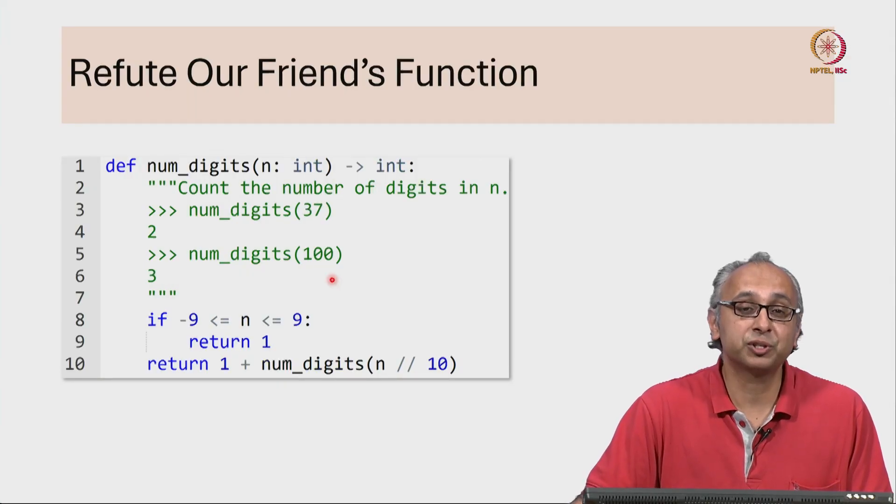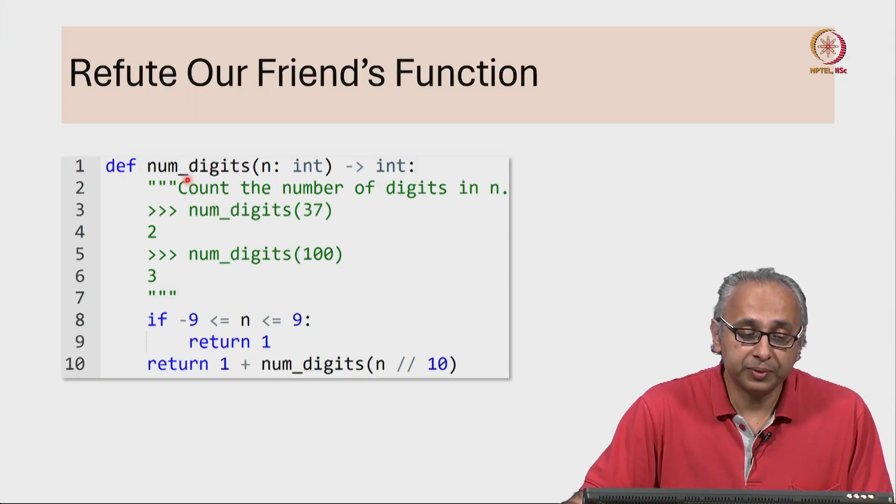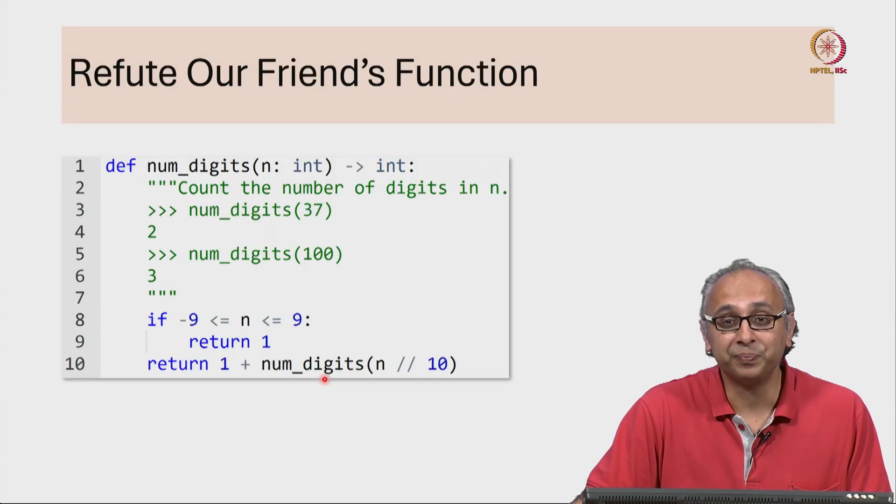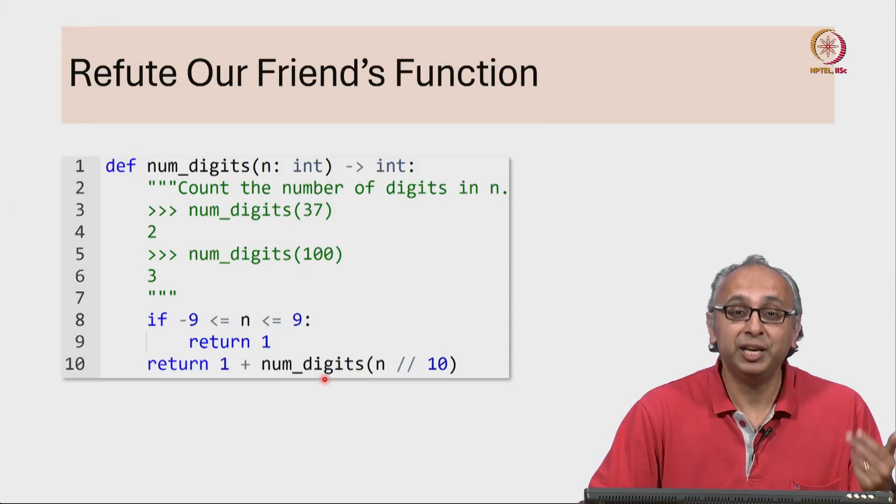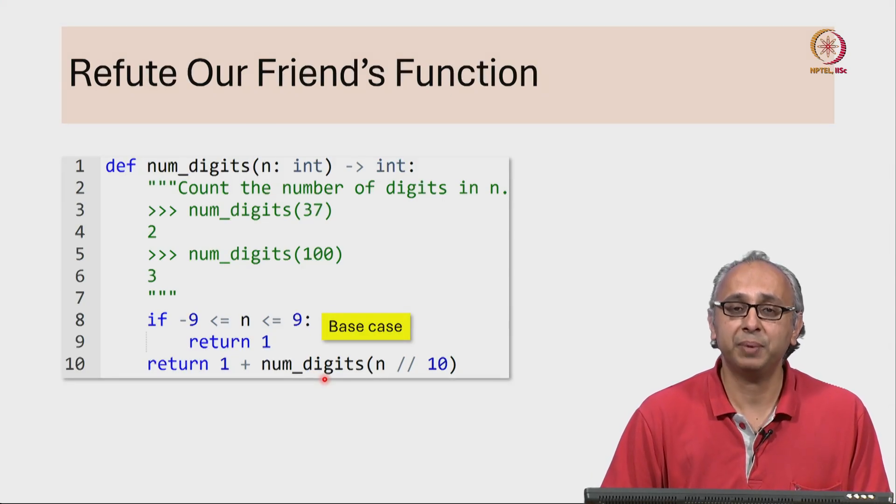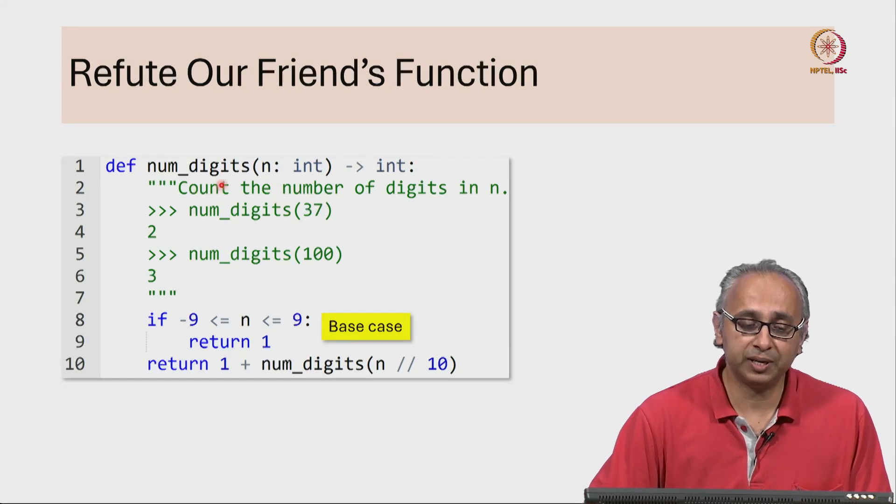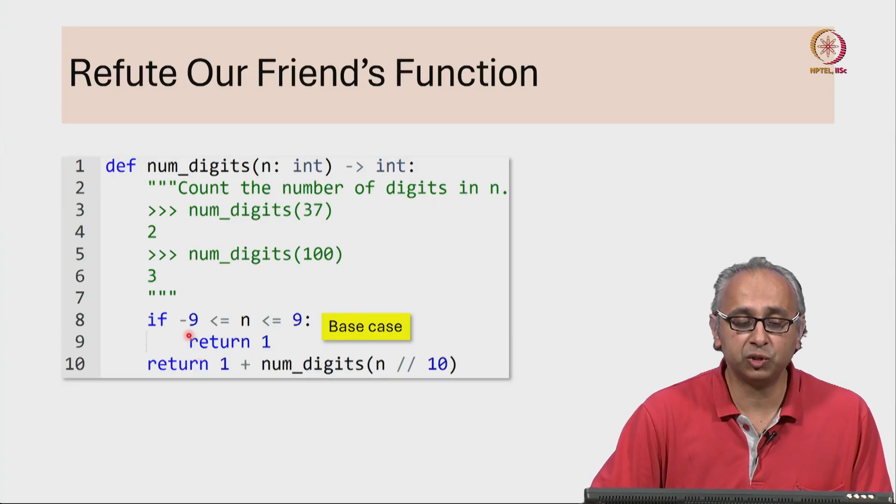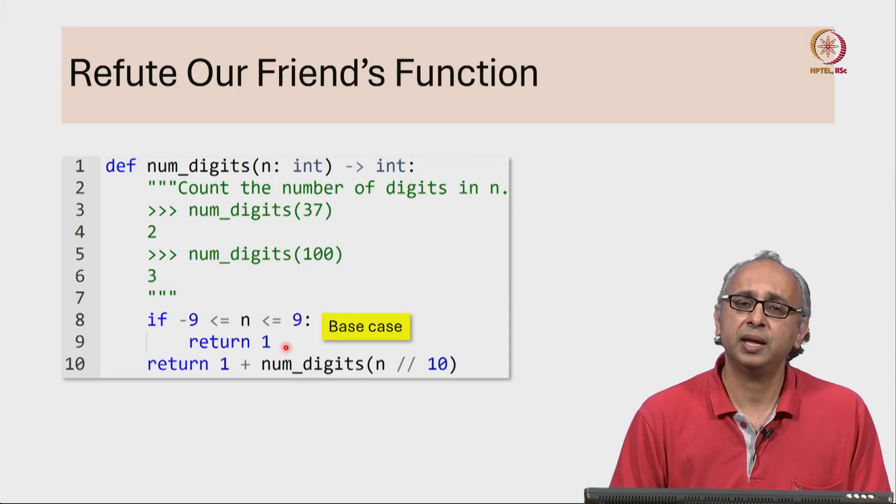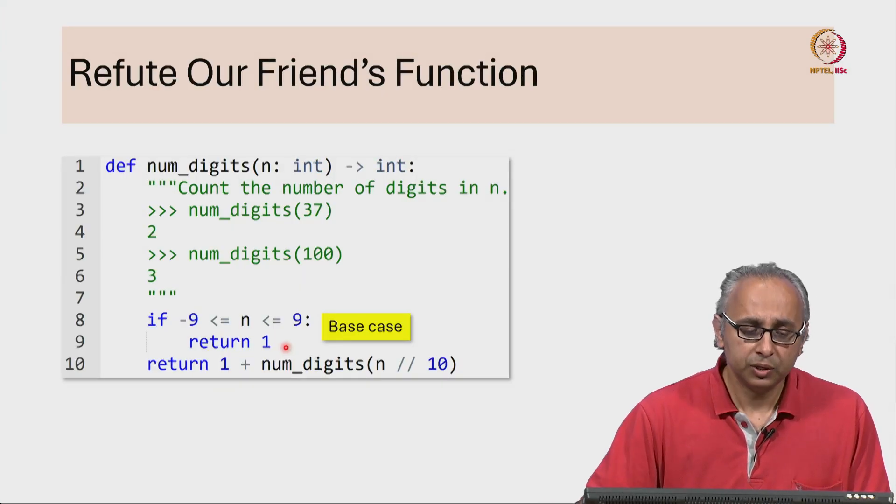Now how does our friend's code work? Well, this function numDigits calls itself recursively. Now to avoid infinite recursion, our friend has a very sensible looking base case. If the given number n is in the range minus 9 to 9, then we return 1 because an input like minus 5 has only 1 digit and similarly an input like 8 has only 1 digit.